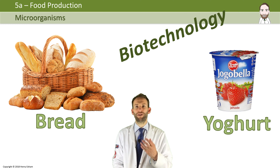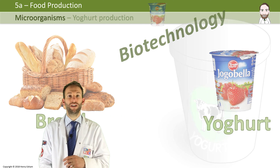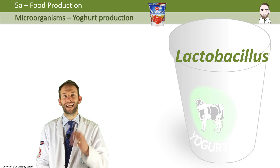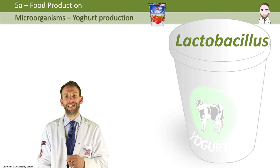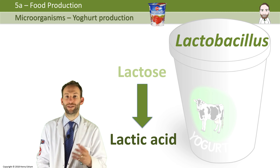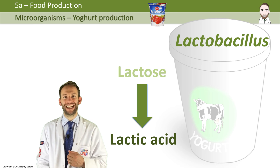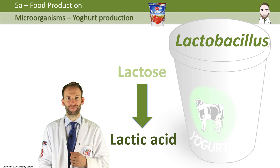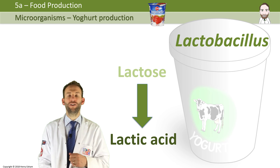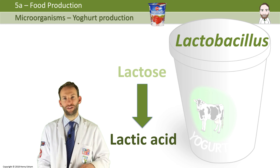The basic idea behind making yogurt is that you add a bacteria called lactobacillus to milk. They use the lactose sugar in the milk for fermentation. They produce lactic acid as a waste product, which is what gives the yogurt its sour taste. Let's go through the main stages of yogurt production.